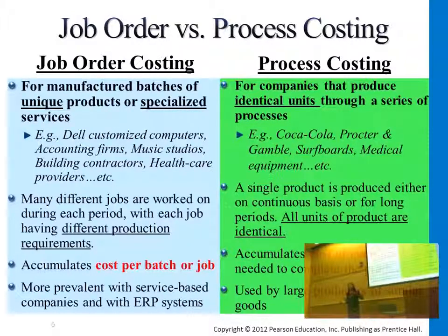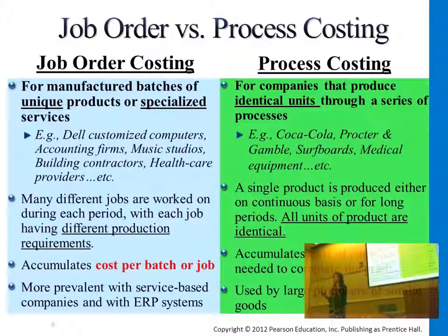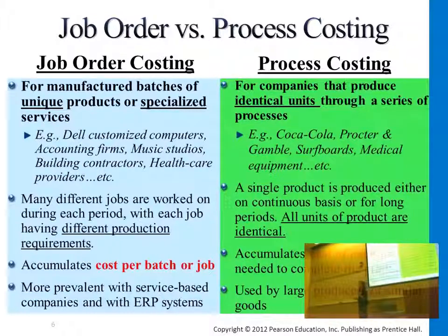So how we trace these costs? We trace them by the production line, by the different working stages. For example, Coca-Cola has a mixing department where we trace the cost of mixing water with the ingredients and the secret formula. Then we move into the bottling department, bottling into Coca-Cola shaped bottles. The next department would be labeling, putting a cap on it, ready for sale. Process costing allows these businesses to separate the costs from different departments instead of tracing costs to different orders, because all orders are just different quantities of the same identical product.